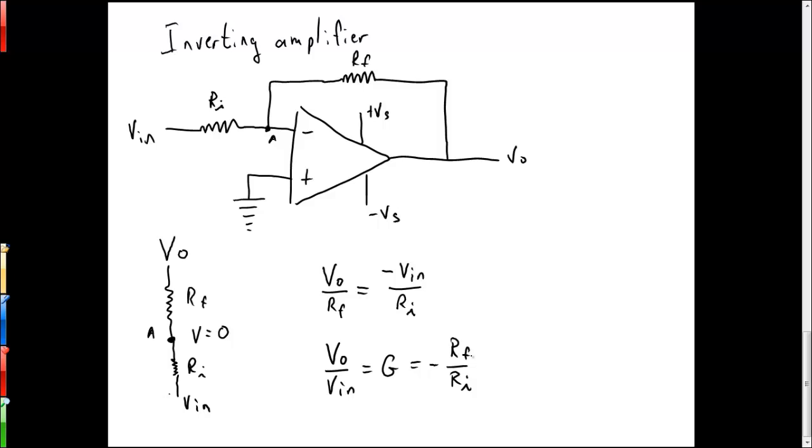So physically, what we see happening is that V in is some, let's assume it's some positive voltage. And because A is going to end up being, the voltage at A is going to end up being brought to ground, or brought to zero.